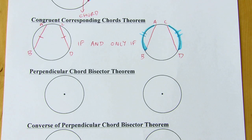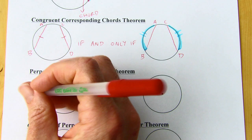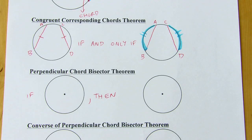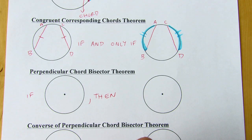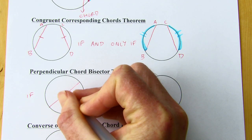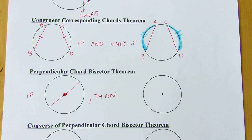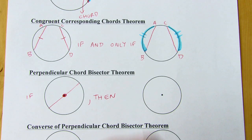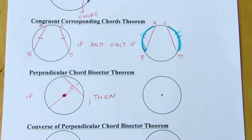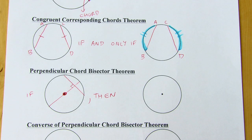Next is the Perpendicular Chord Bisector Theorem. This one is going to be an if-then statement — we have the converse right below, so it's not an if-and-only-if. I've got the center of the circle marked, and I'm drawing in a diameter — a chord that goes through the center. If this diameter is perpendicular to a chord, I'll draw in that chord and mark the right angle.